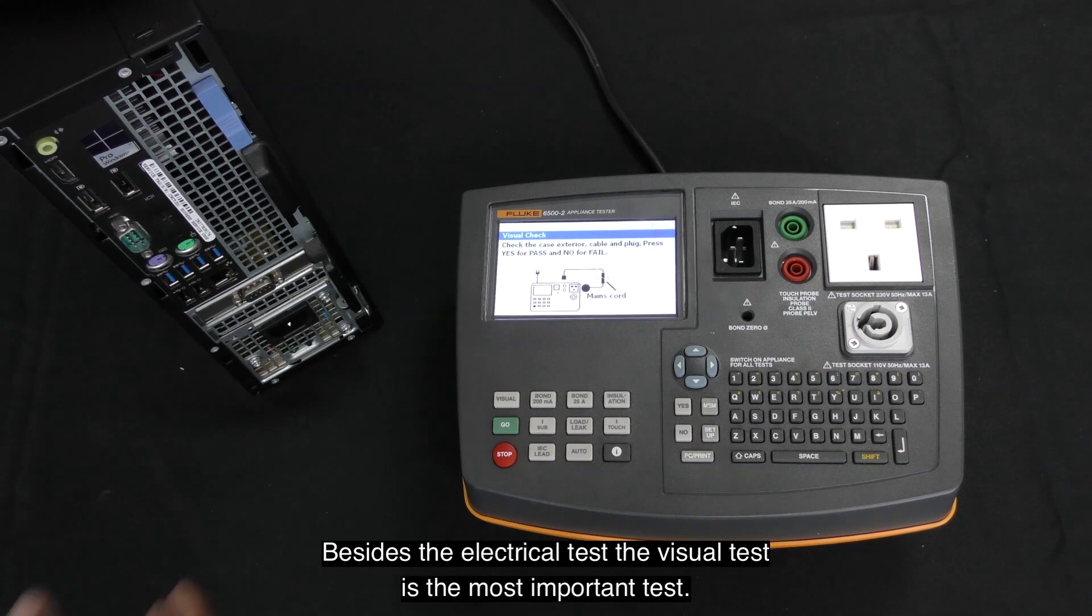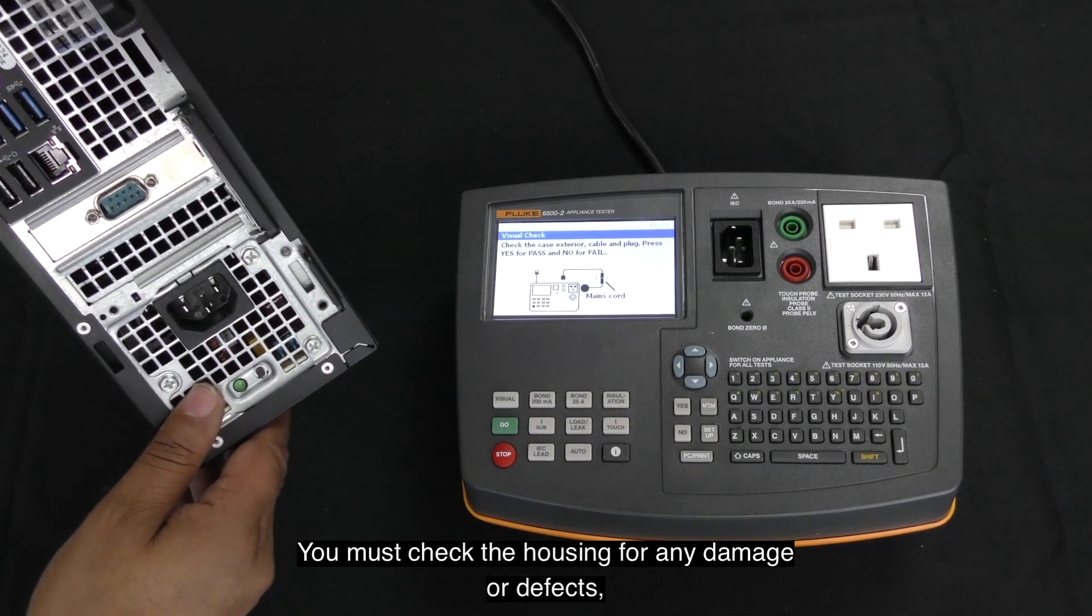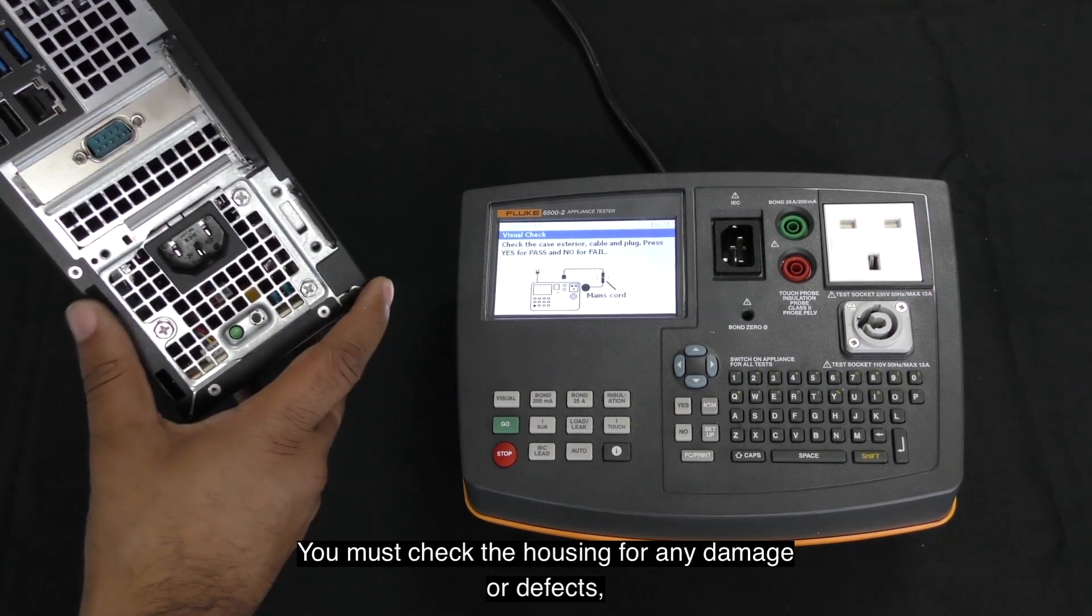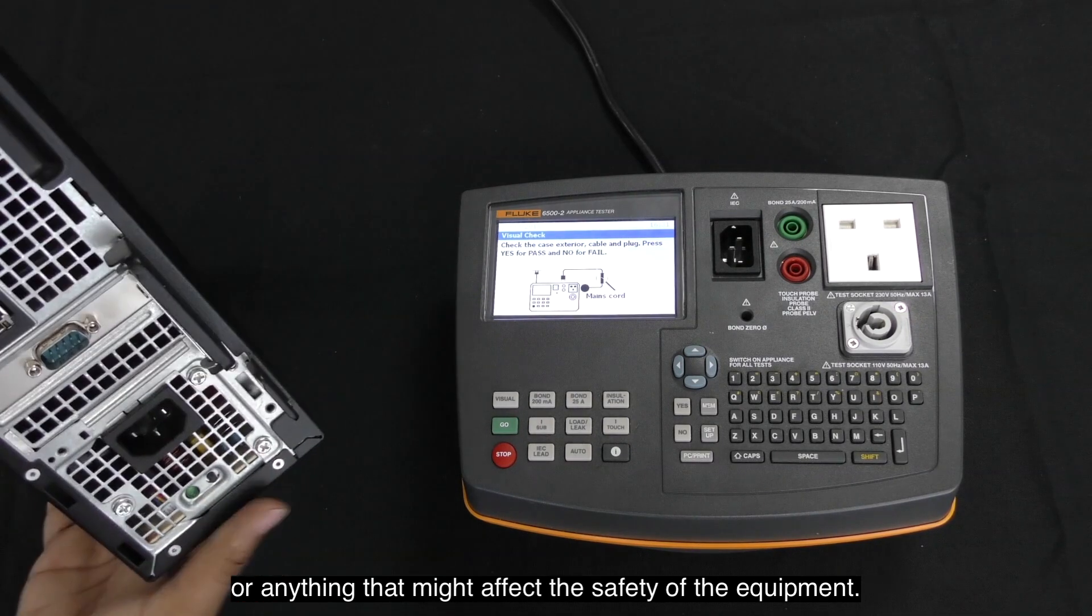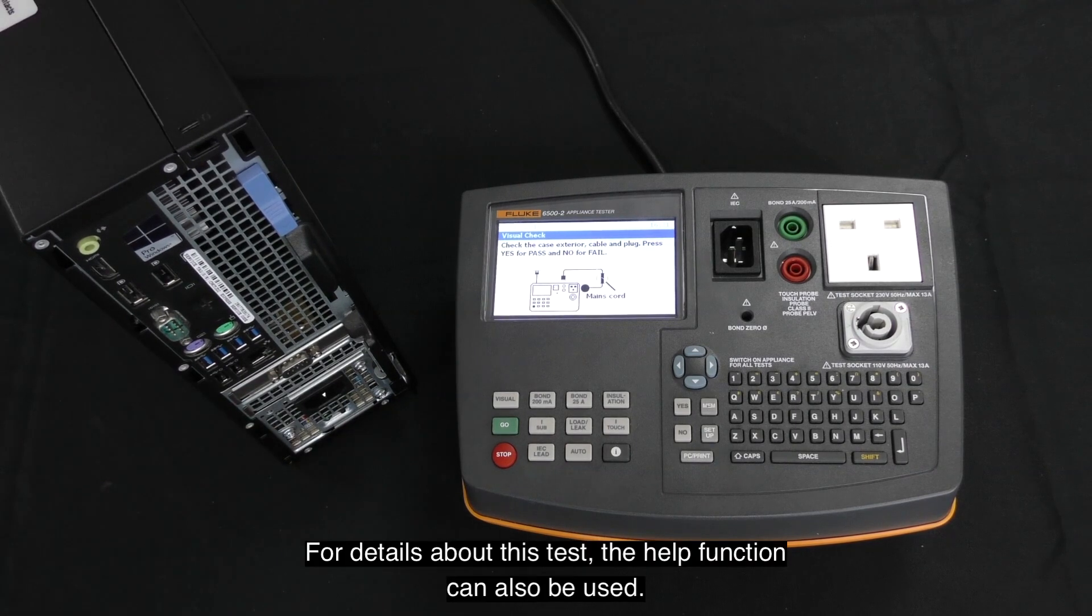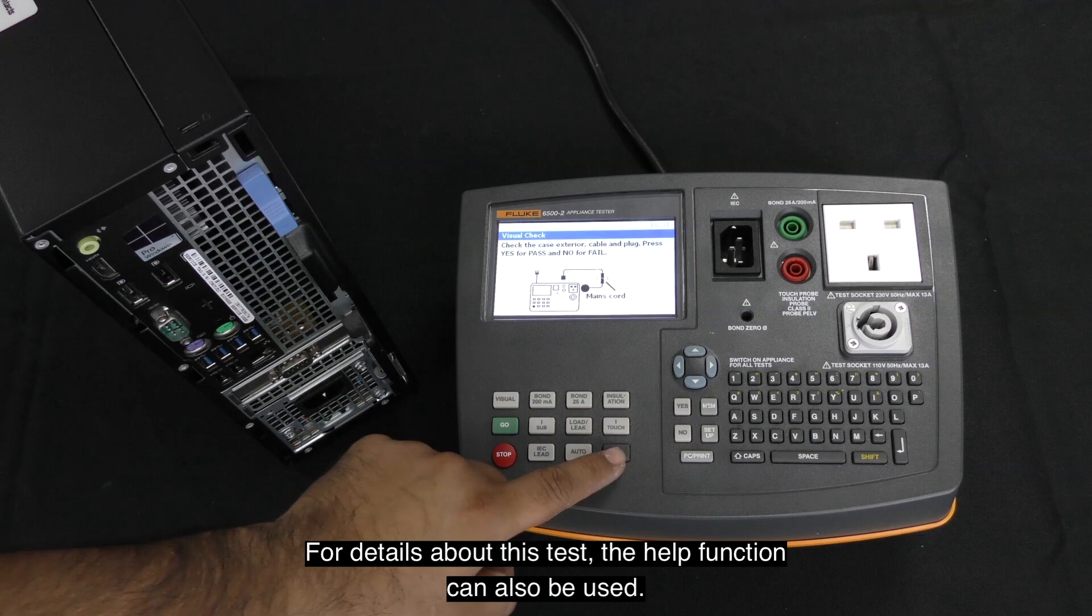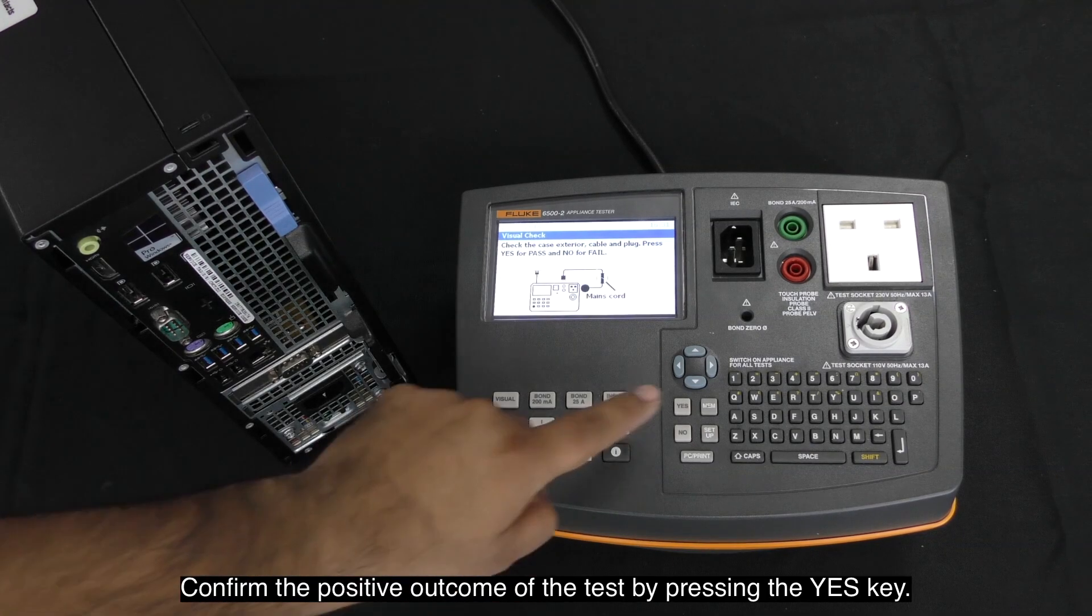The first thing you need to perform is a visual test. Besides the electrical test, the visual test is the most important test. You must check the housing for any damage or defects or anything that might affect the safety of the equipment. For details about this test, the help function can also be used.